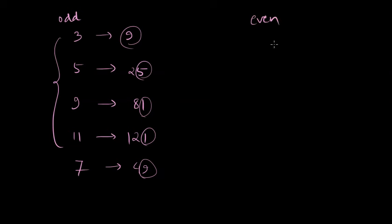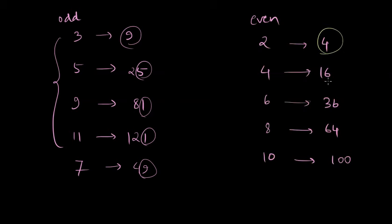Let's say you square even numbers. So what happens to the digits in the units place? So it's 4, 6, 6 again, 4, and 0. You always find an even number in the units place when you are squaring the even numbers.